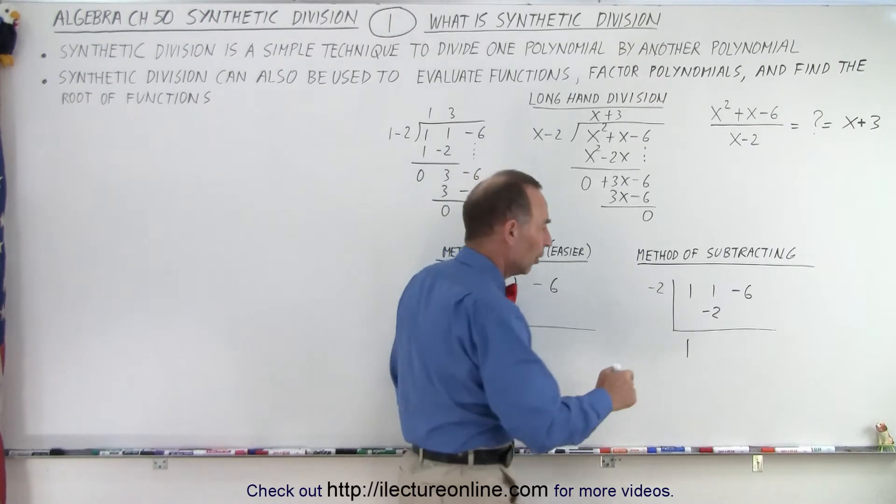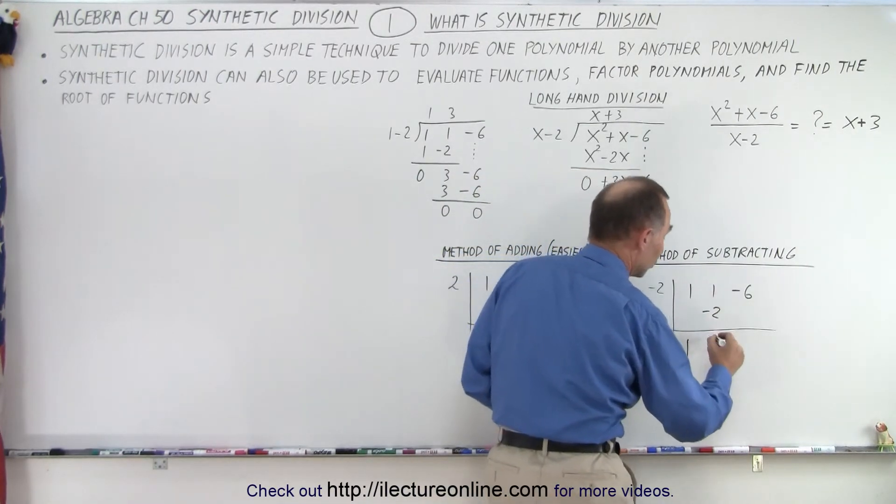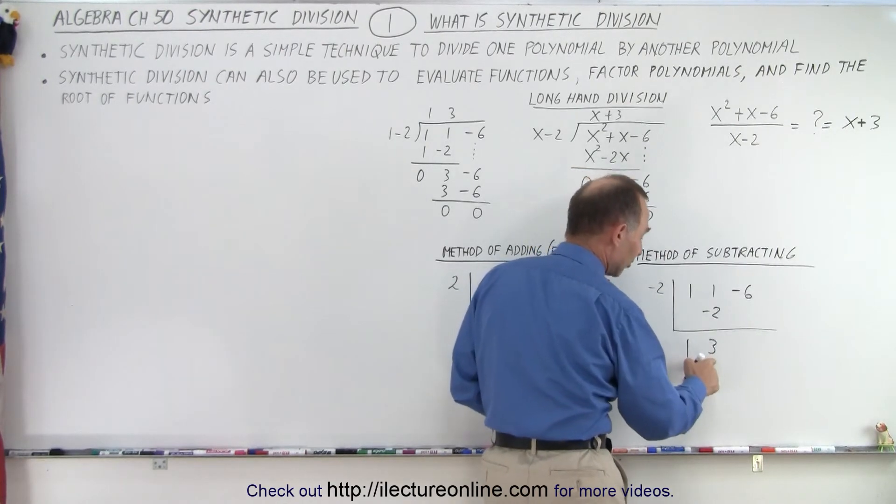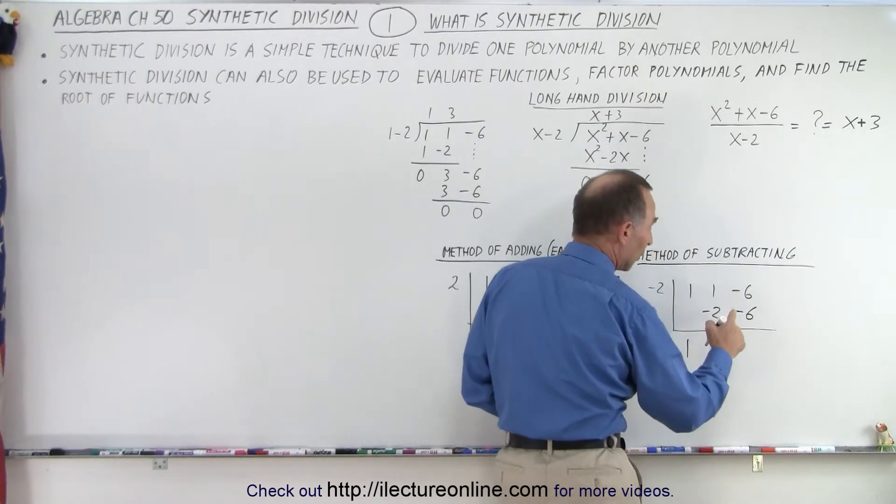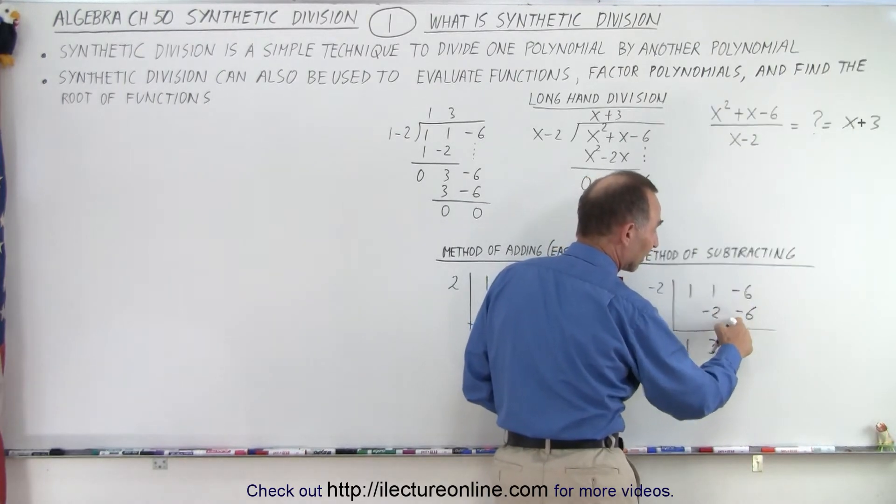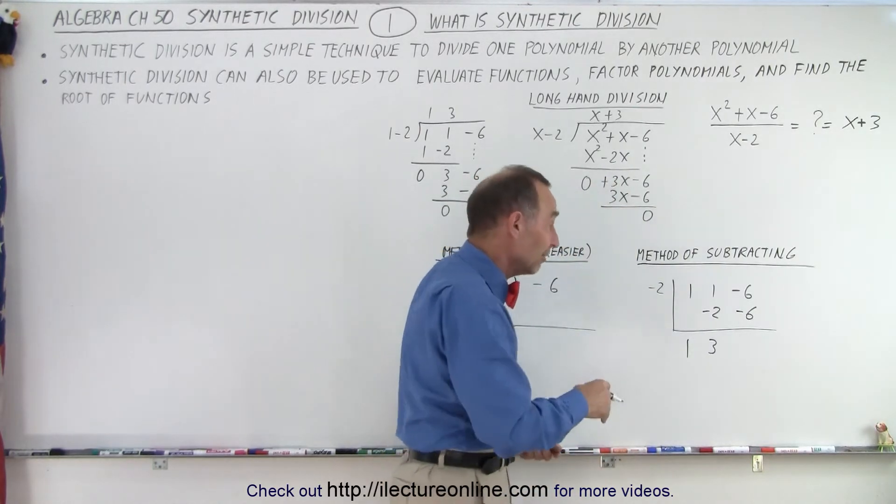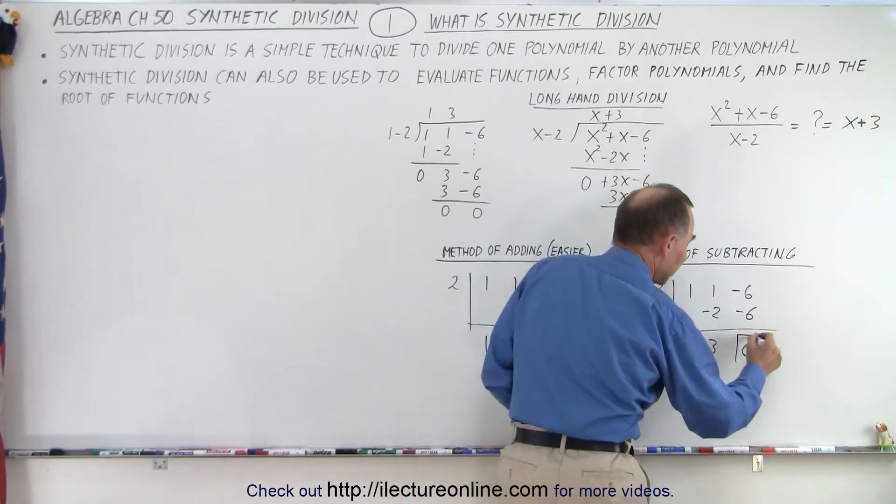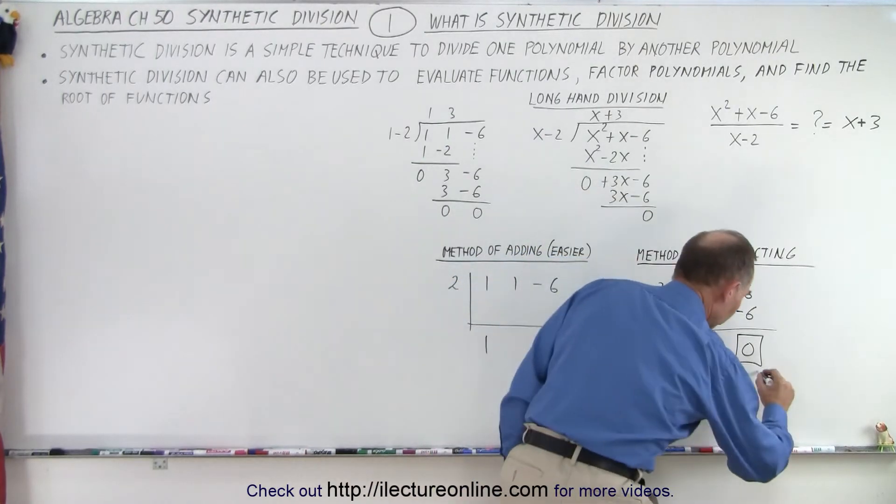So 1 minus a minus 2 is actually 1 plus 2, which gives us 3. Now we take negative 2 times 3, which is negative 6, and we write it there. Now we take negative 6 and subtract the negative 6 from that. So again, subtracting a negative number is like adding the positive number. So negative 6 plus 6 gives me 0. If we end up with a 0 here, that means there's no remainder.